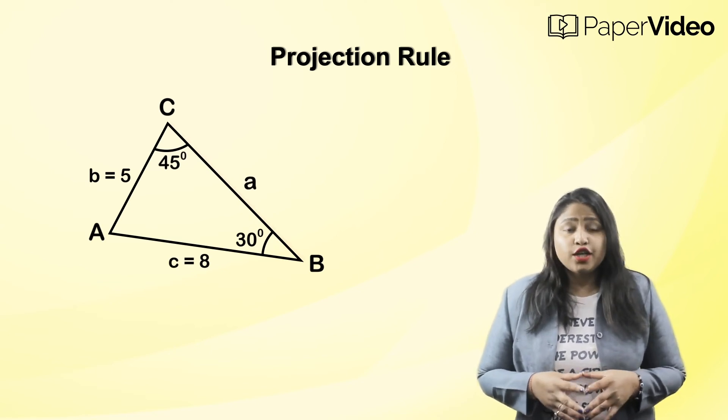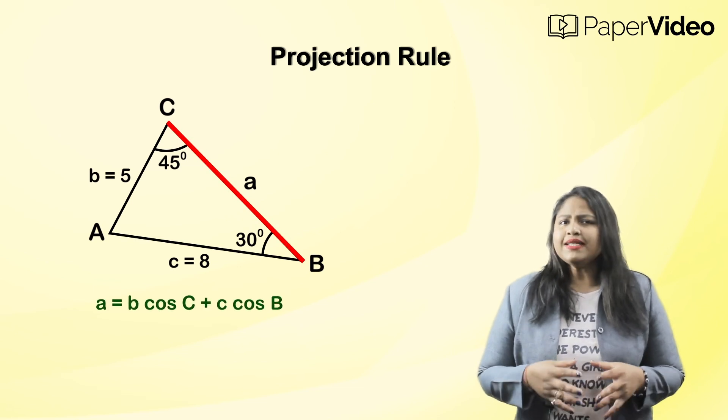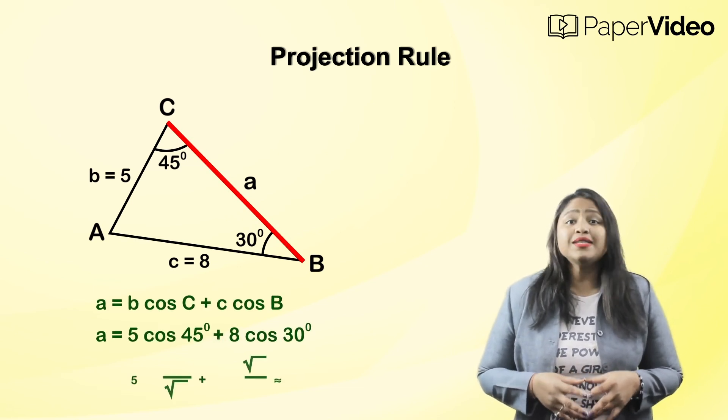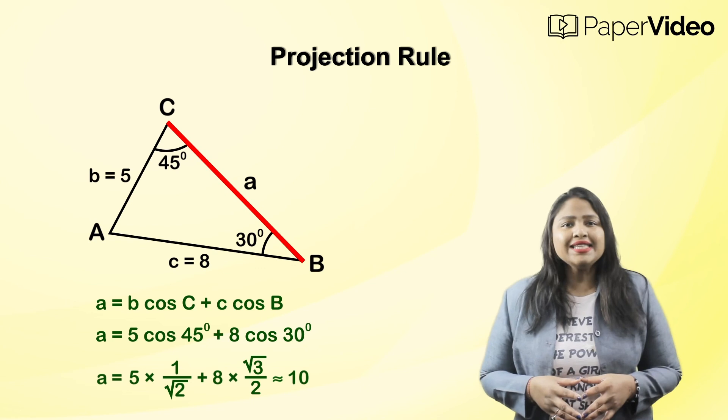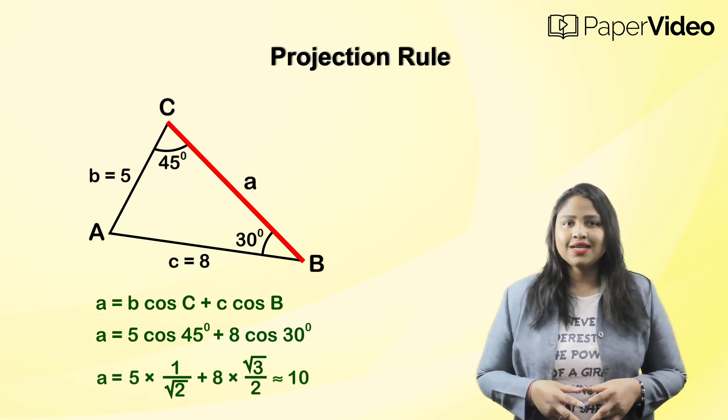Then in such a case we can use the projection rule. By simply putting the respective values and simplifying we can easily find the length of the third side of the triangle. This is how we use the projection formula.